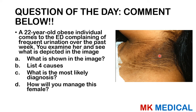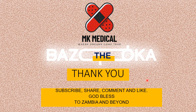Before I leave, here is the question of the day — comment your answers below. A 22-year-old obese individual comes to the emergency department complaining of frequent urination over the past week. On examination, you see what is depicted in the image. A) What is shown in the image? B) List four causes. C) What is the most likely diagnosis? D) How will you manage this female? Let me know in the comments — I'll pin the best contribution. Thank you for watching Bazooka Season 3 Episode 3. My name is Dr. Moses Kazewu — subscribe to Zambia and Beyond, until next time, bye.